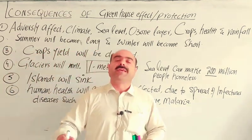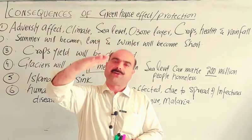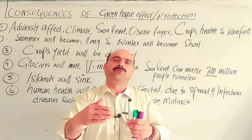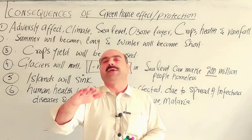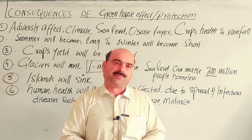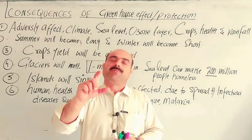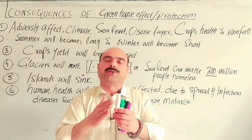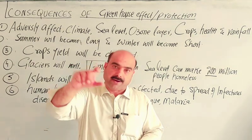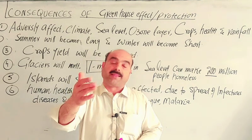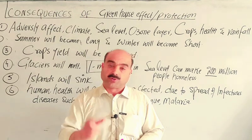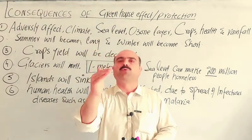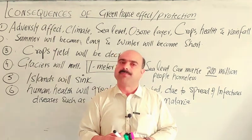As greenhouse gases accumulate, the average temperature of the earth continues to slowly and gradually rise. A rise of just 1 degree Celsius in temperature will move plant zones towards the poles — up to 90 kilometers — and will result in a 33% loss of food production.